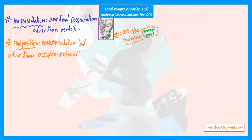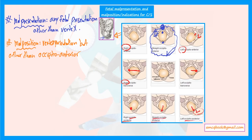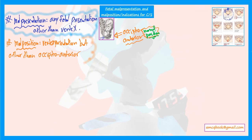Looking at this picture of the mother's pelvis: the symphysis pubis is located anteriorly and the sacrum is located posteriorly. This represents occiput anterior because the occiput of the baby's head is directed anteriorly. Other than this is called malposition, such as right occiput anterior, left occiput anterior, occiput transverse (right or left), and occiput posterior (oblique, right, or left). All of these represent malposition.